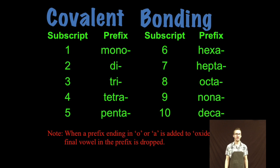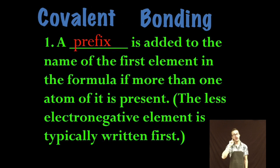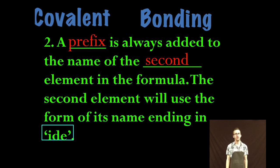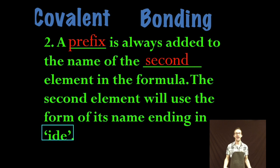Part of the reason why students find this easier is because we're already familiar with those prefixes and what they mean. You will use a prefix in front of the name of the first element in the formula if more than one atom of it is present, and you'll use a prefix always in front of the name of the second element in the formula. The second element will use the form of its name ending in -ide.